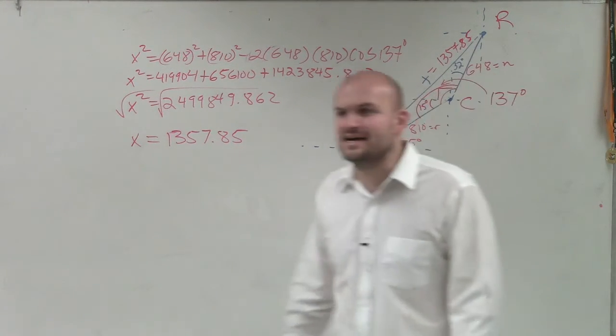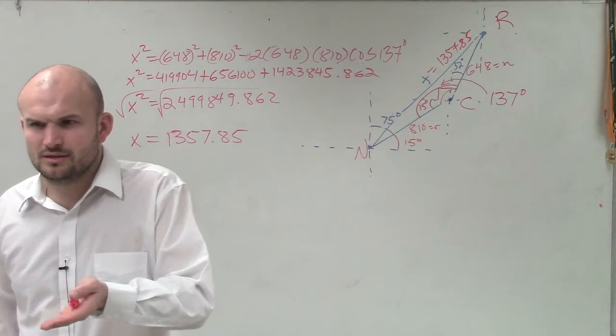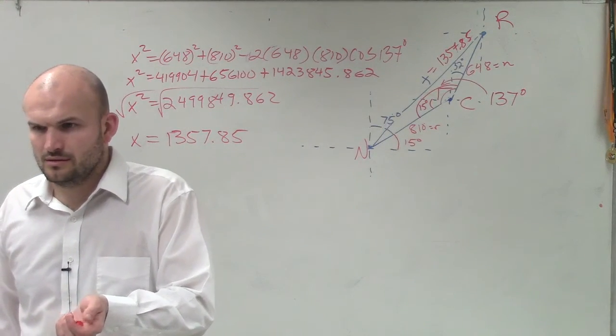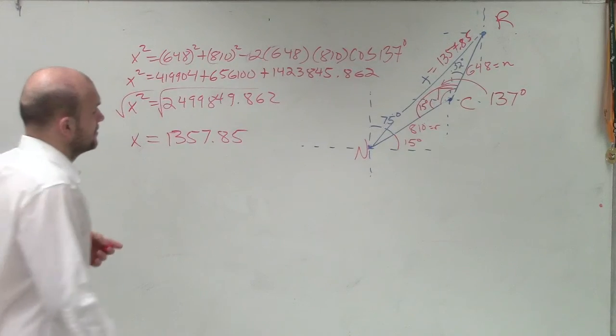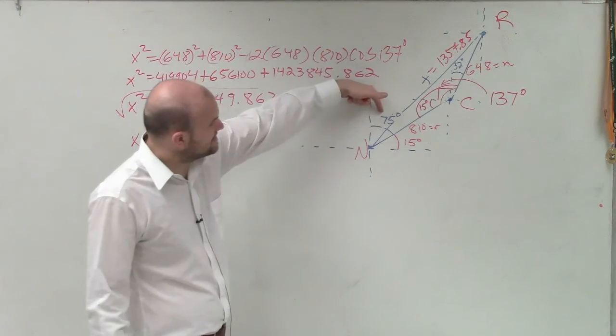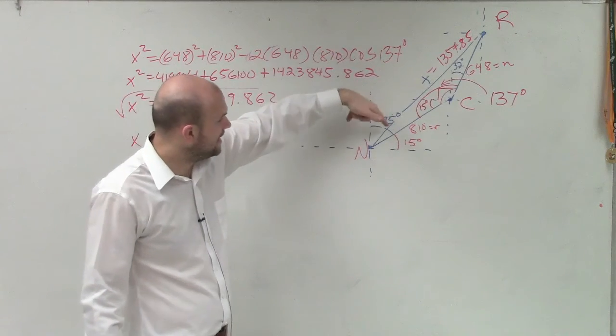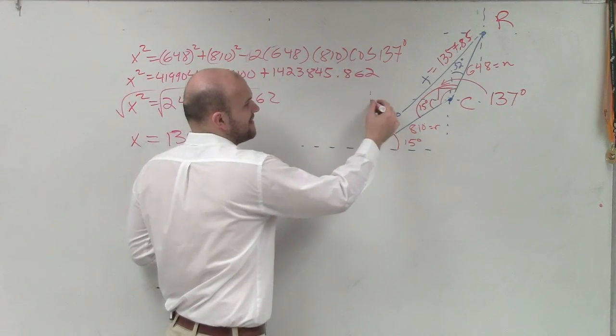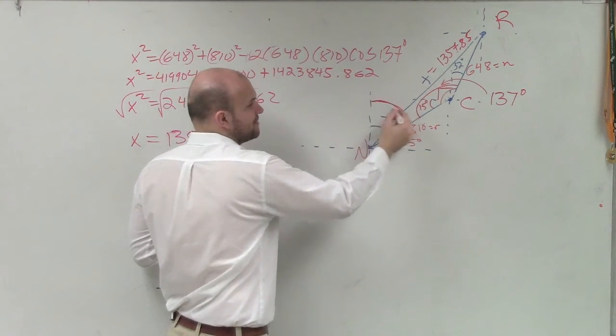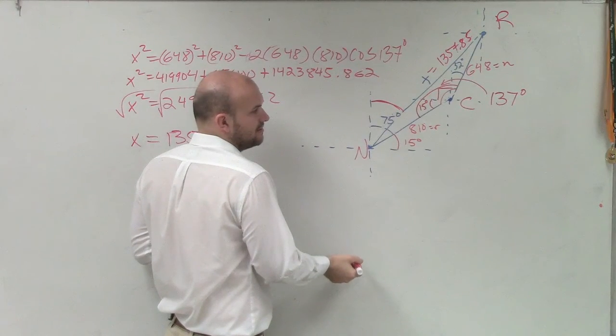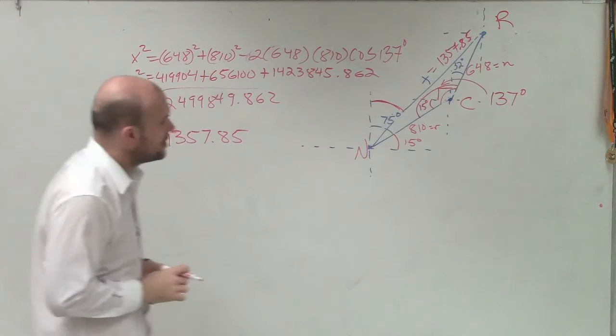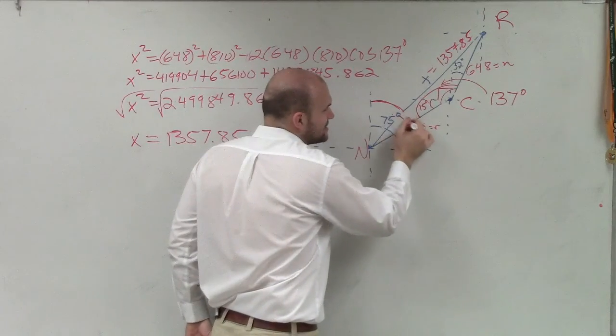Then the next one, it says find the bearing from where? So now if we know that this is 75 degrees, and now we want to find this bearing, what is going to be that bearing, right?